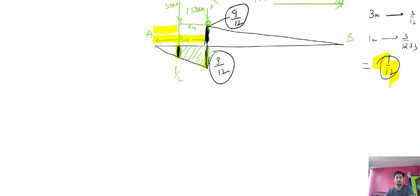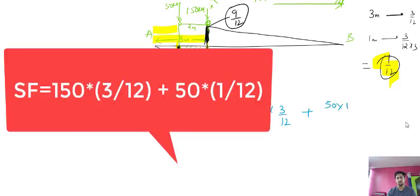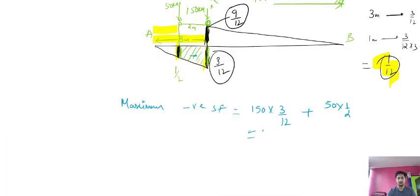This region is under loading in the negative region, so we get the maximum negative shear force. Shear force = load × ordinate: 150 × (3/12) + 50 × (1/2). Calculating this gives 41.67 kN. So the maximum negative shear force is 41.67 kN.